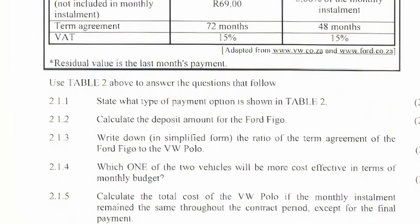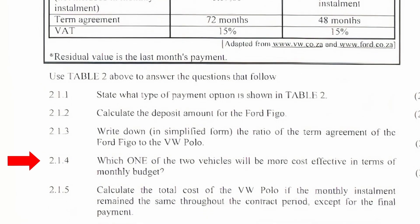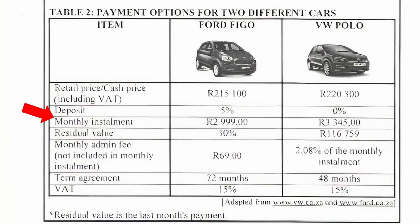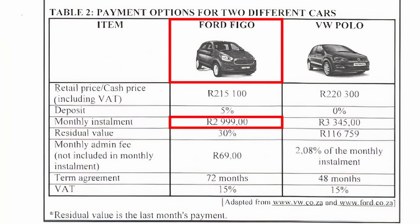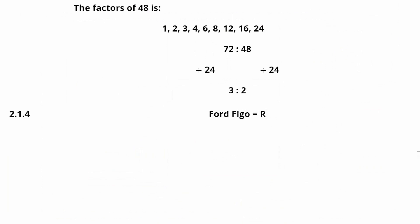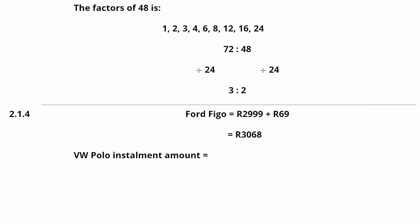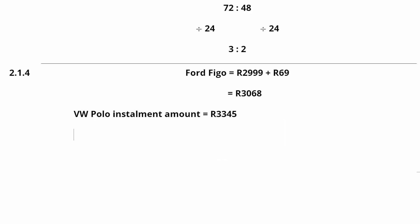Question 2.1.4: Which of the two vehicles will be most cost effective in terms of monthly budget? For monthly budget, we take into account the monthly installment and the monthly admin fee for each car. For the Ford Figo, the monthly installment is R2,999 and the monthly admin fee is R69, giving a total monthly budget of R2,999 + R69 = R3,068. This is still less than the monthly installment of the VW Polo, so the most cost-effective vehicle is the Ford Figo.